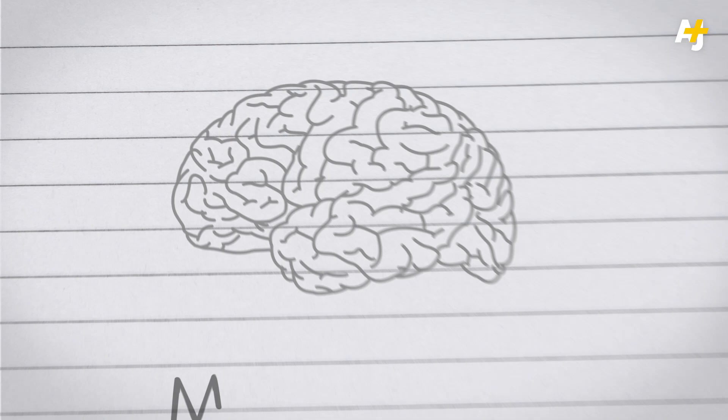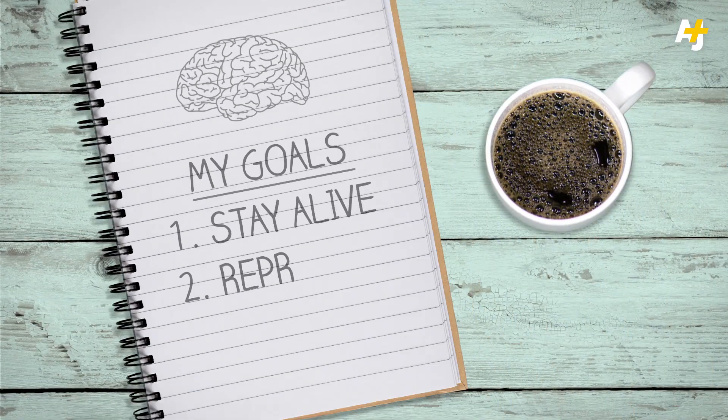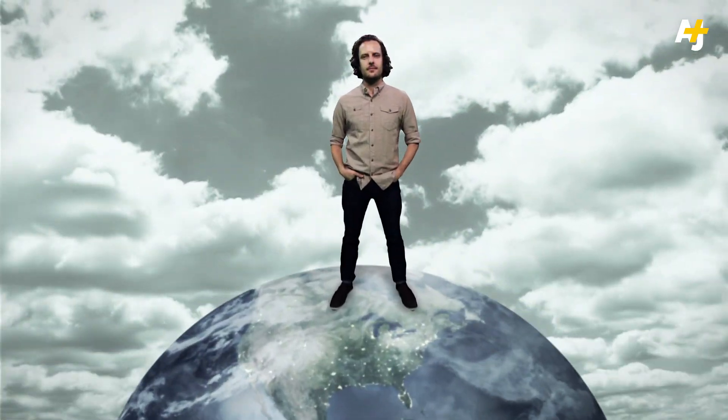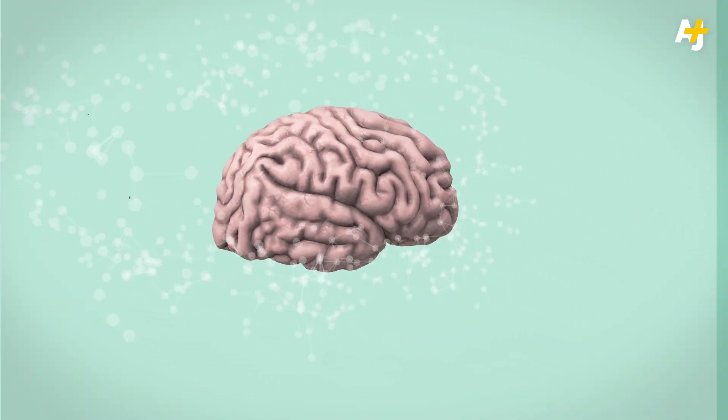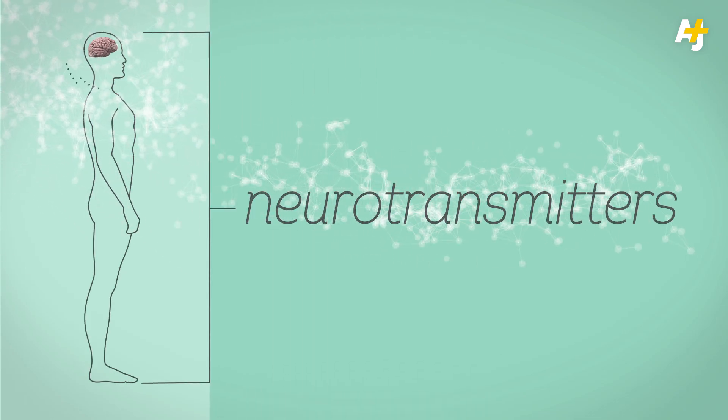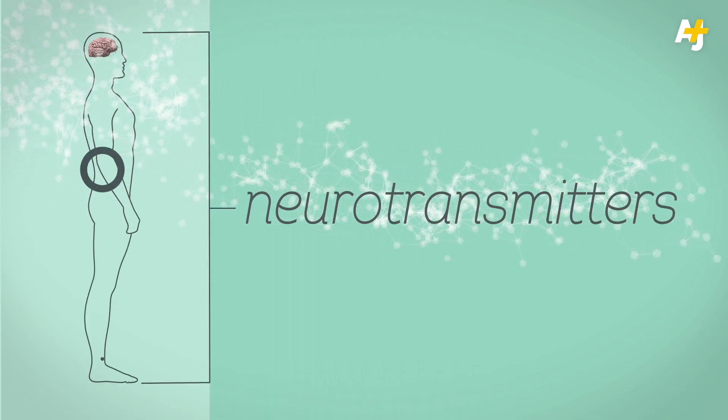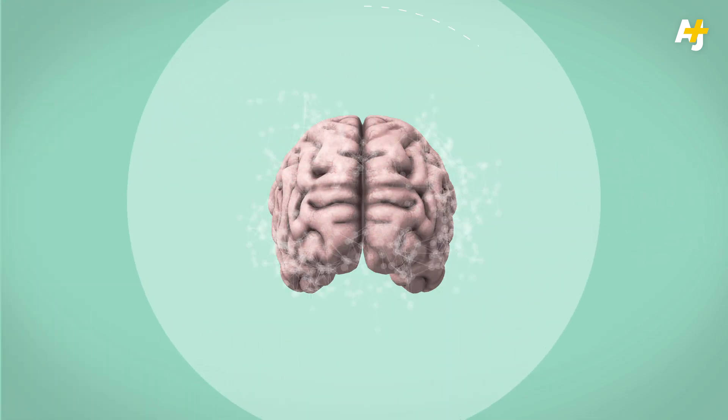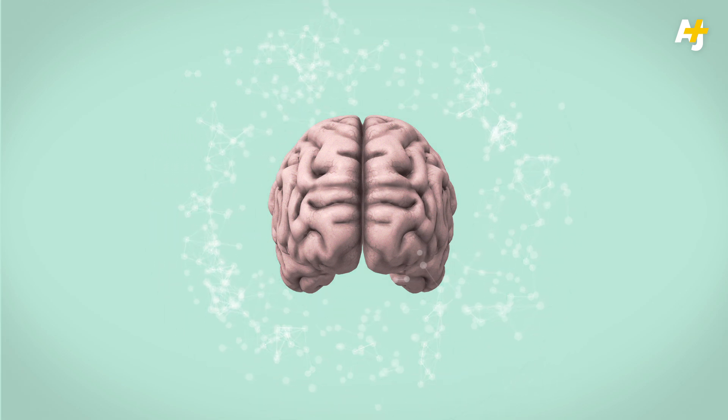One of the brain's goals is to keep our physical bodies alive and reproducing. So when we do something good for our survival, like eating delicious food or having sex, our brains produce chemicals that make us feel good. These chemicals are called neurotransmitters, and they're basically the way our brain and body communicate with each other. The brain produces hundreds of neurotransmitters,